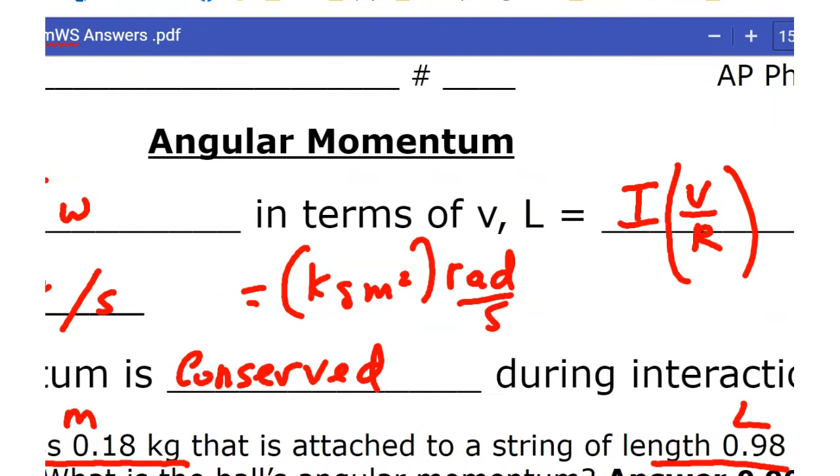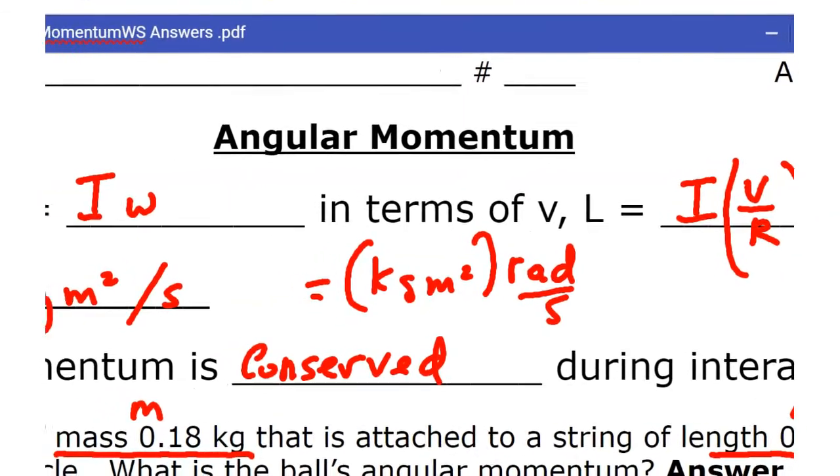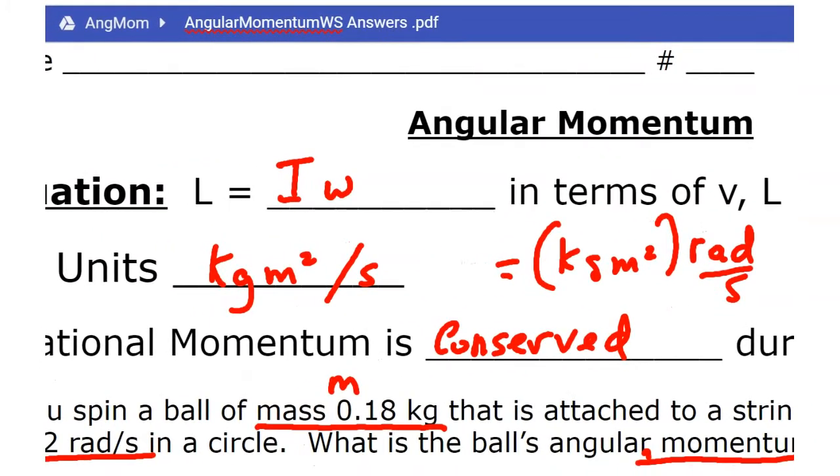Now, you can change the ω to V over R, and the other equation is I times V over R. The units, this is, I find somewhat strange.